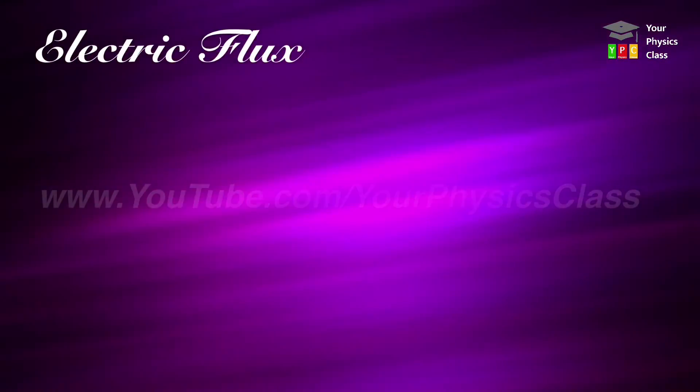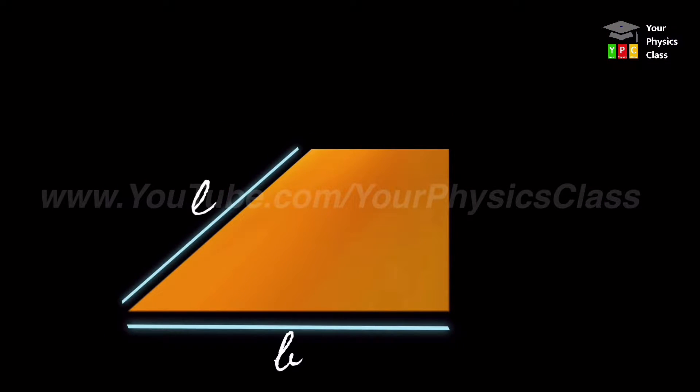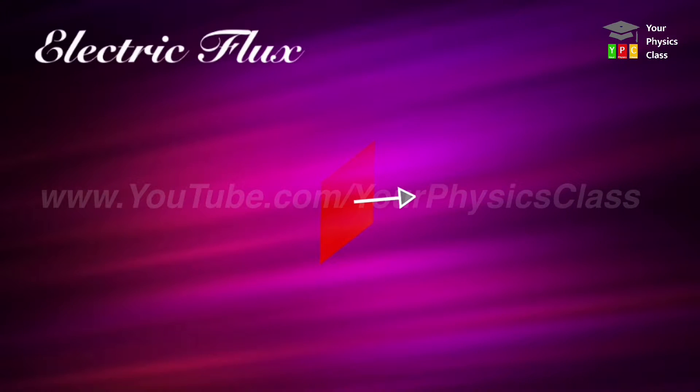Electric flux is a measure of electric field through a given surface. Imagine I have a small surface area which we call infinitely small surface. Though area is a scalar quantity, here we assign it a direction so it becomes a vector. This direction is a positive vector perpendicular to the surface. We make this area into an area vector.